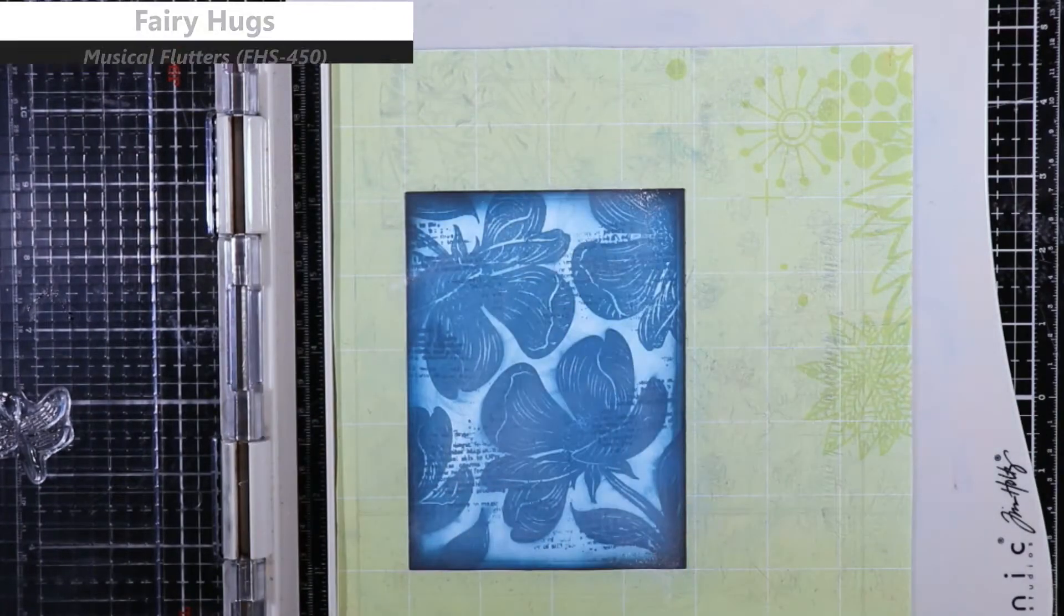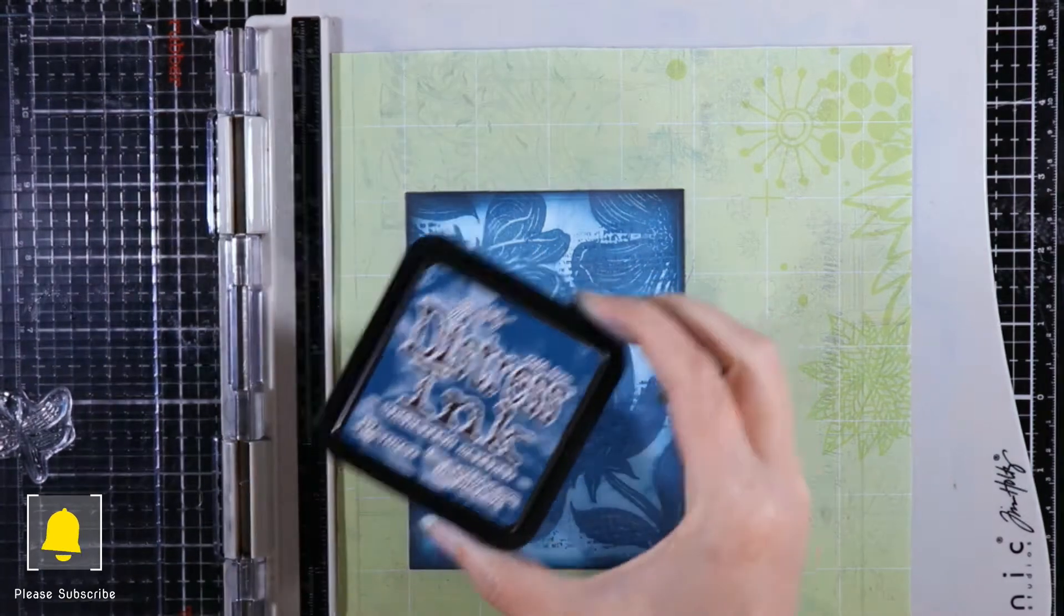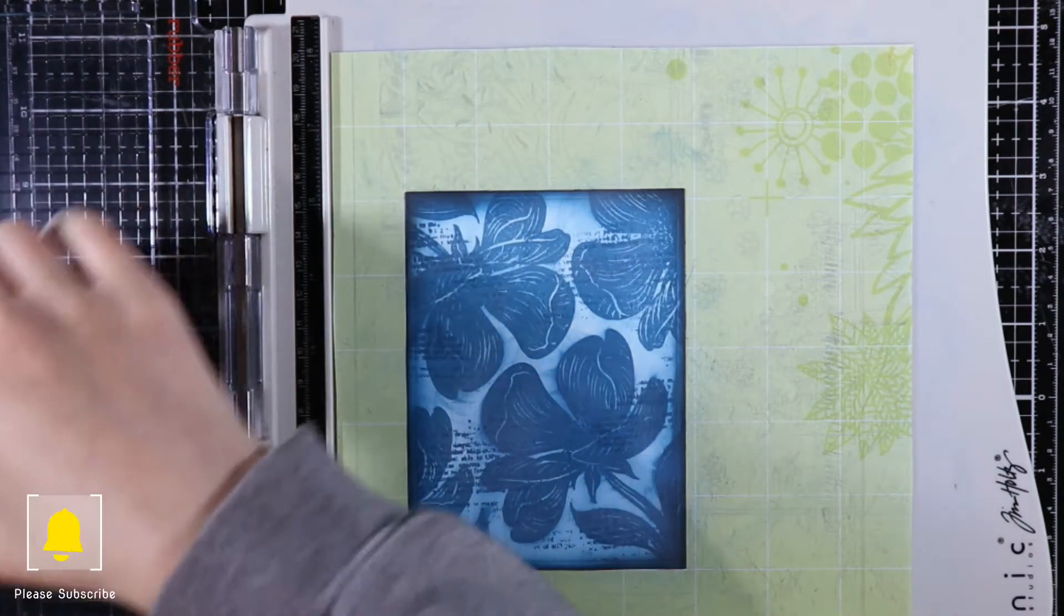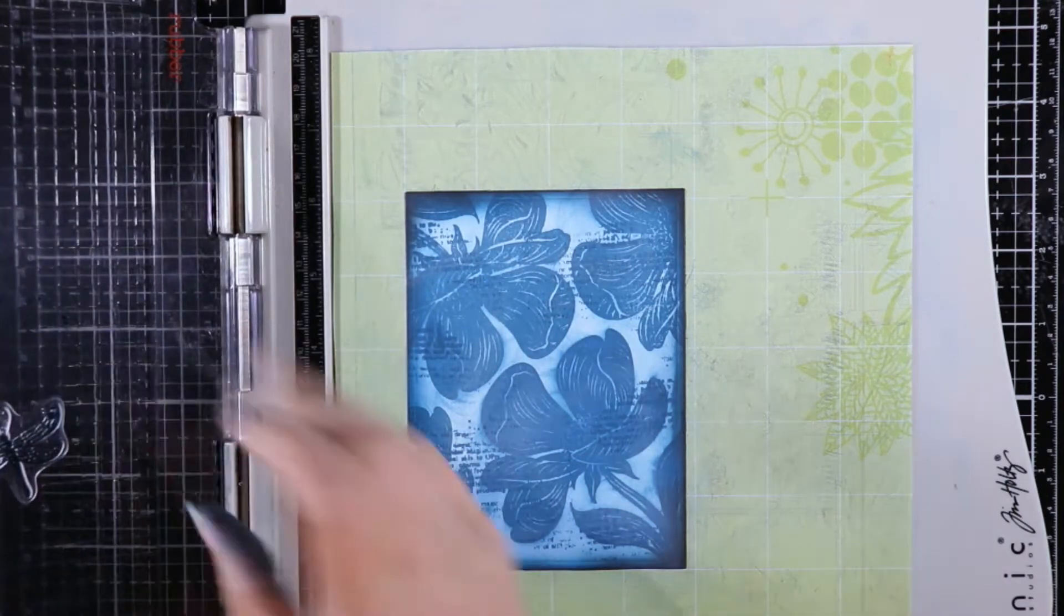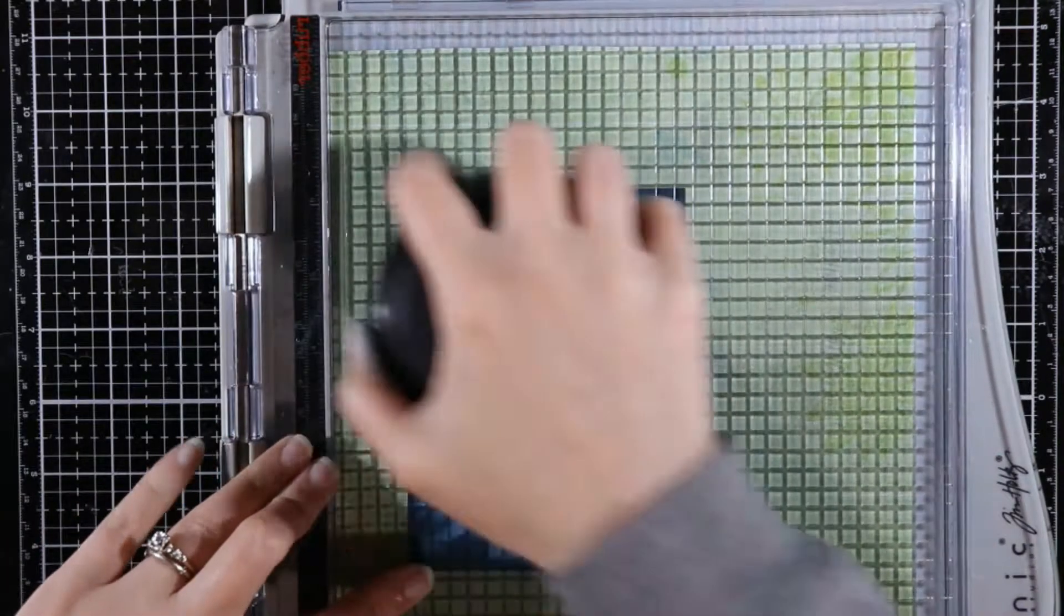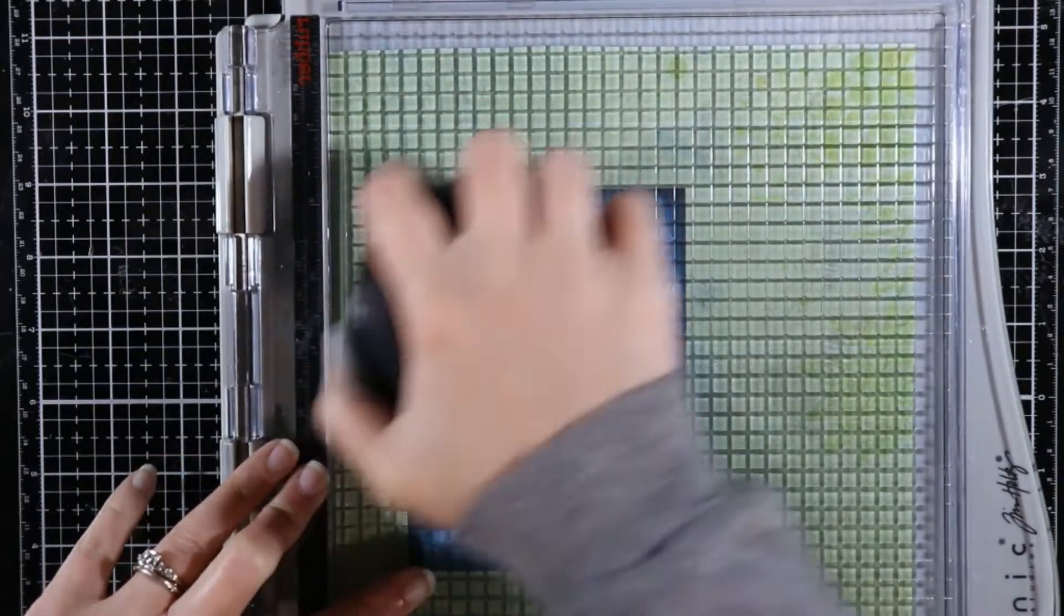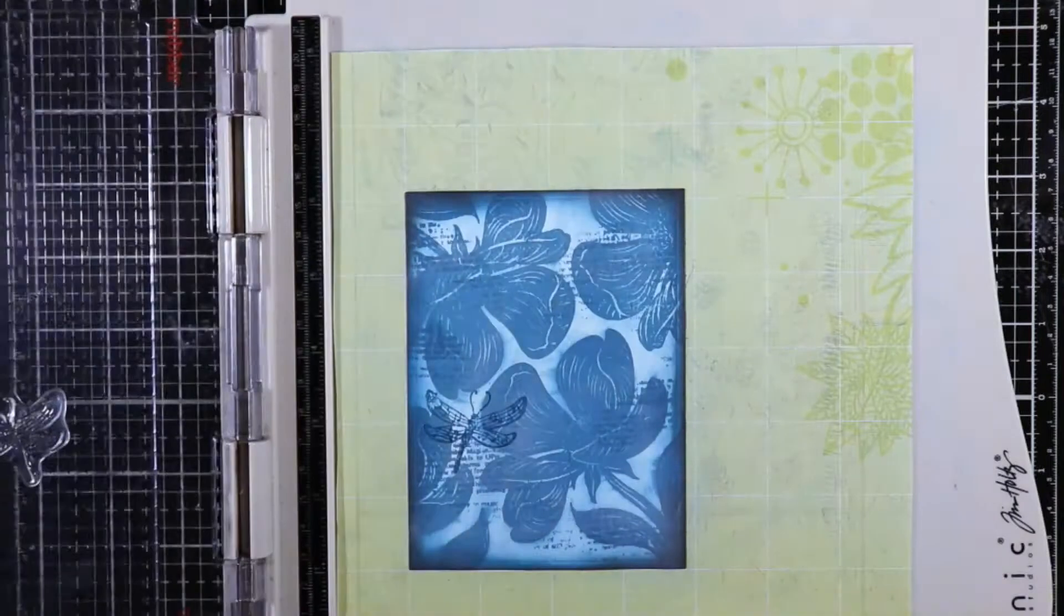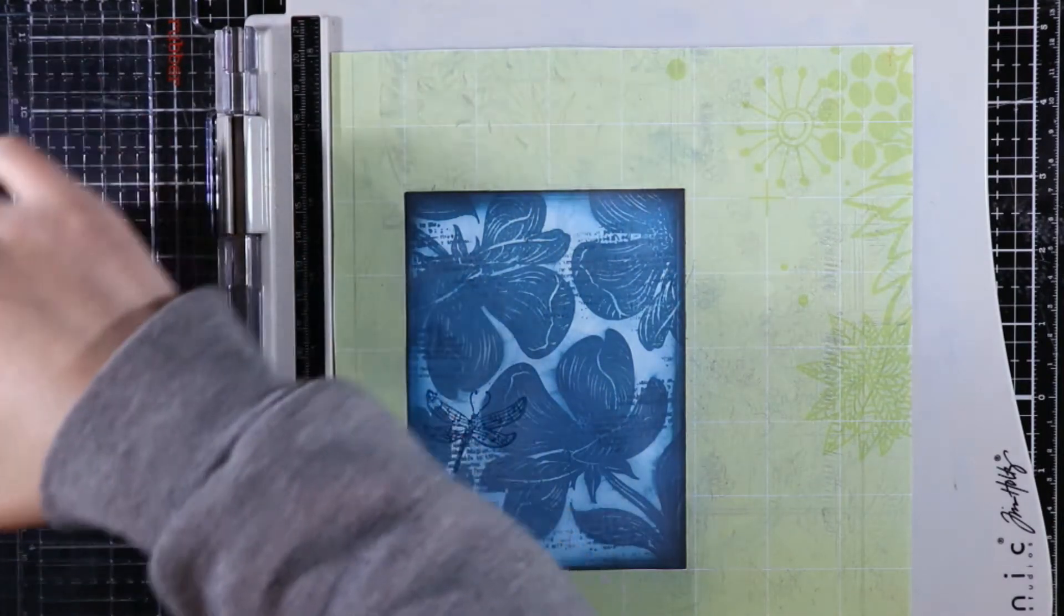Now I'm going to come in here with the distress ink again to stamp. I know a lot of people say that distress inks do not stamp well and they don't stamp crisp, but you can get them to stamp, and I had good results here. I'm choosing the distress ink here for the same reasons I chose it before. If I've used the distress oxide, it would just blend right into those flowers and you wouldn't see it.